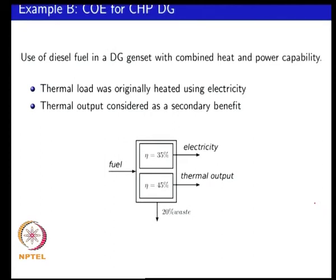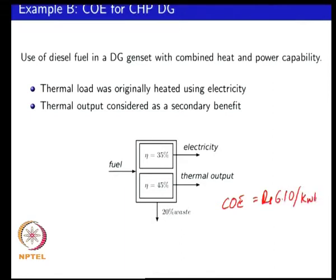In a second situation we looked at operating this generator set as a combined heat and power unit, where the fuel in the diesel is being converted into electricity with a given efficiency and the waste heat is also being captured with some given efficiency. Based on the fact that you could make use of this thermal output — which might potentially have been heated from electricity — you can calculate your benefit. In this particular case the cost of energy worked out to be 6 rupees 10 paisa per kilowatt hour, which is less than 7. So potentially this can be a situation where producing electricity in this manner might be economically feasible.